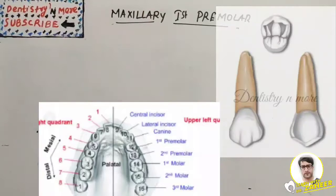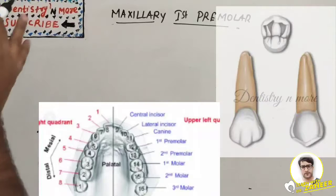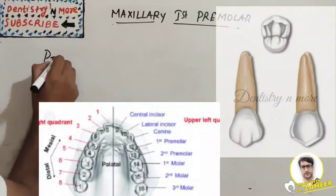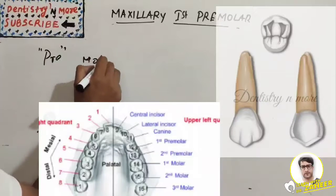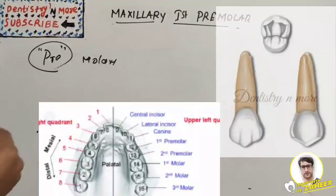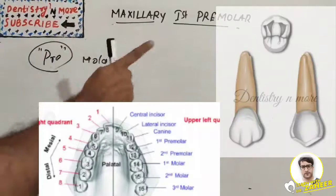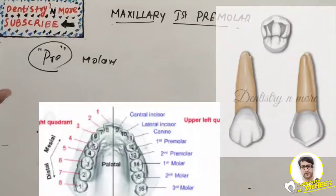Posterior teeth are two premolars and three molars. Premolars are so named because they are placed between the anterior teeth and the molars — pre means before molars. Premolars assist canines and molars in tearing and chewing food. We know the functions of teeth: incising, tearing, and grinding. The premolar helps with tearing, which is the function of canines, and grinding, which is the function of molars.